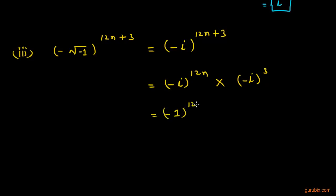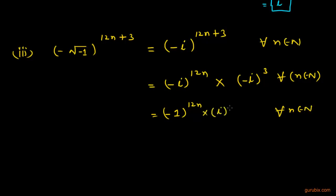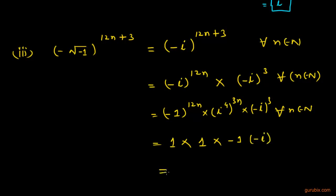We can write this as negative 1 raised to 12n, for all n belonging to the natural numbers. So this value is negative iota, and iota raised to 4 times negative iota cubed gives 1, and this value is negative 1 into negative iota, which equals iota. So this is the solution of the third part.